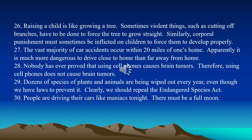Number twenty-nine: Dozens of species of plants and animals are being wiped out every year, even though we have laws to prevent it. Clearly we should repeal the Endangered Species Act. This would be an example of a false cause fallacy. It's not that the Endangered Species Act is causing species to be wiped out — rather, it's trying to prevent species from being wiped out.